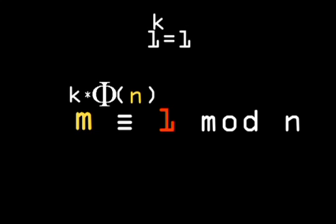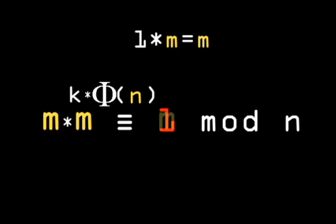Second, if you multiply 1 by any number, say m, it always equals m. In the same way, we can multiply the left side by m to get m on the right-hand side. And this can be simplified as m to the power of k times phi n plus 1.